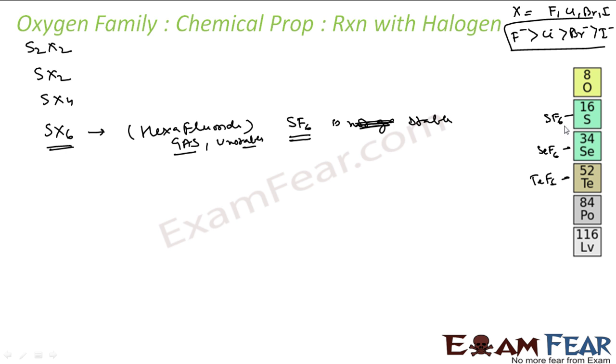And why is this stable? This is stable because of the steric hindrance. If you see the structure of SF6, this is like a plane. So because of the steric hindrance, it is stable but others are not stable.